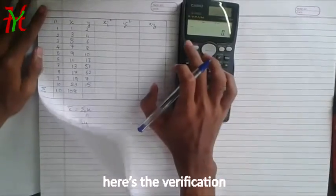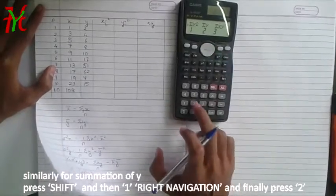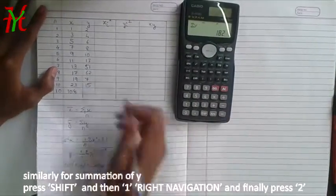Now similar for summation Y, shift sum 1 and then right navigation button and 2. Get it? 182.